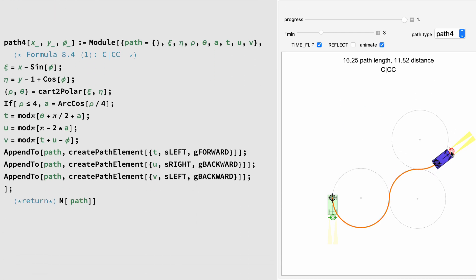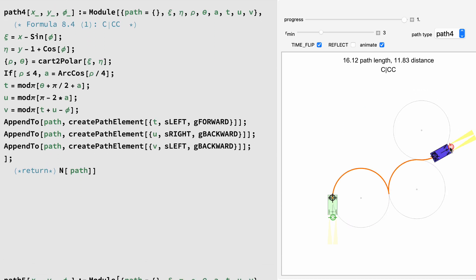Path 4 is a curve, followed by a switch of forward gear, followed by two curves in opposite directions. You can see the conversion from Cartesian to polar coordinates, and a few simple trig calculations. The function mod pi returns the input angle wrapped to be between negative pi and pi.